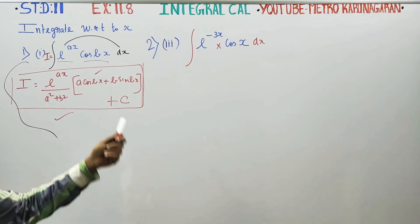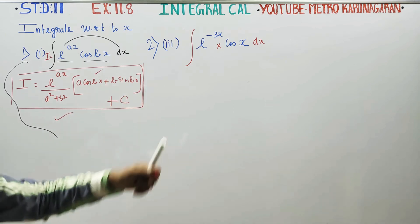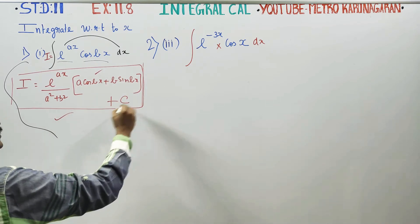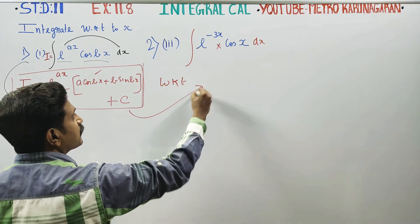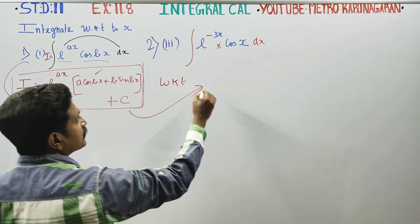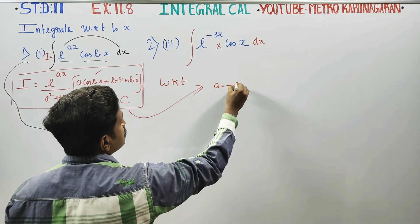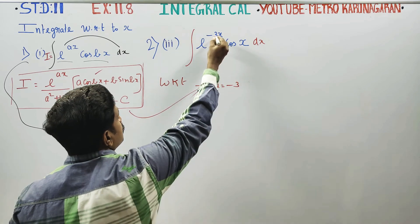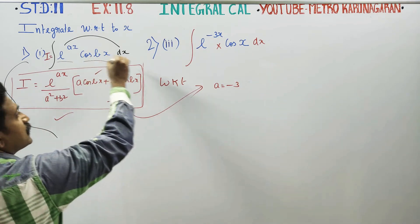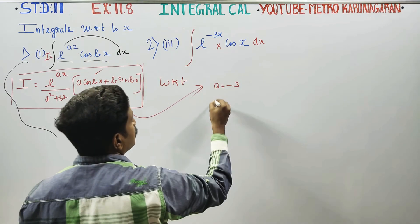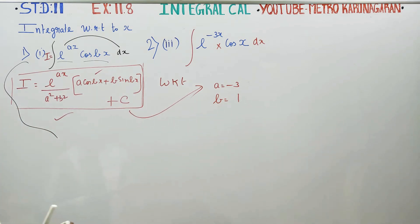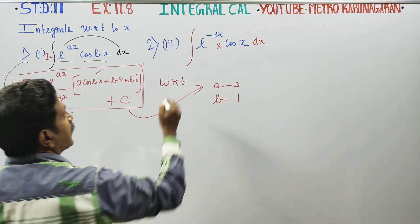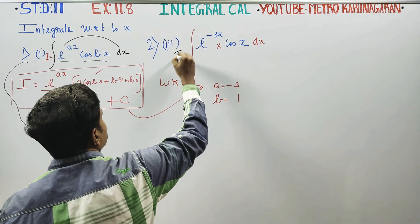Now, just substitute the values into the result. We know the formula, so you can examine it. What is my A? A is the exponential value, minus 3. cos b is equal to 1. If you use this formula, you can name the values accordingly.